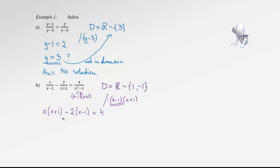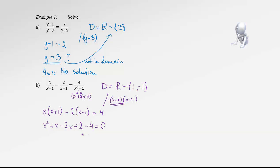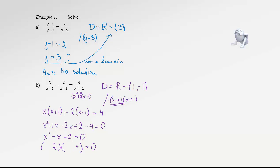Now we solve the polynomial equation. Releasing the brackets and multiplying through: x squared plus x minus 2x plus 2, bring the 4 to the other side as negative 4, equals 0. Collecting like terms: x squared minus x, and 2 minus 4 is negative 2, equals 0. To factor, the product is 2 and the difference is 1 — so 2 and 1 work. Since the difference is negative, the larger number takes the middle sign: (x minus 2)(x plus 1).